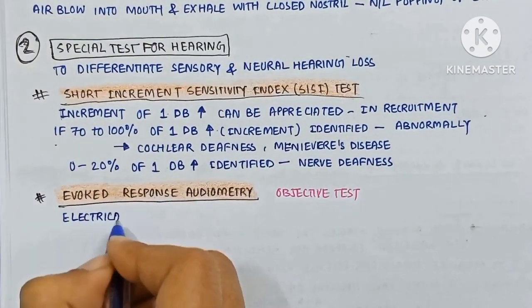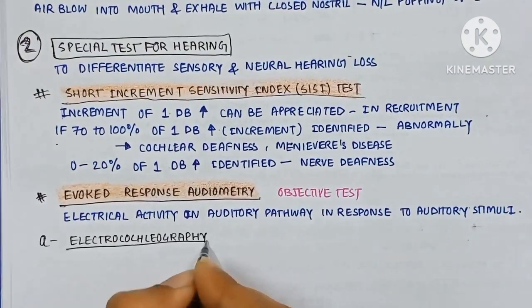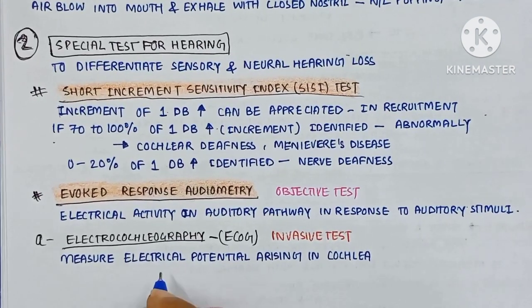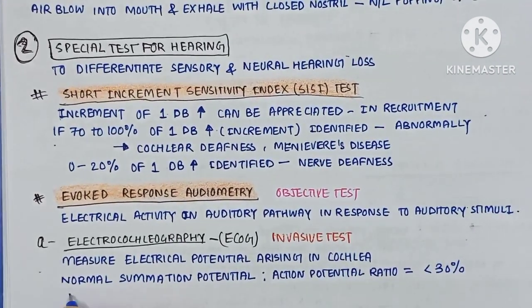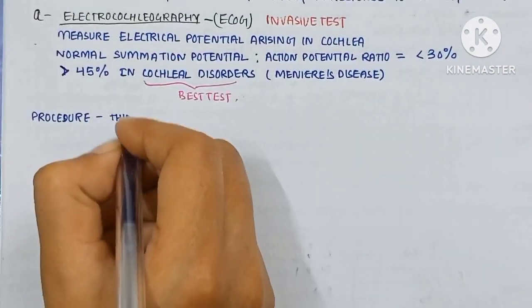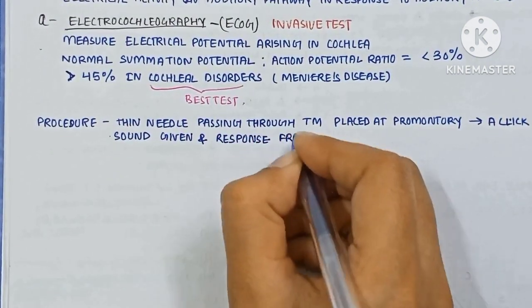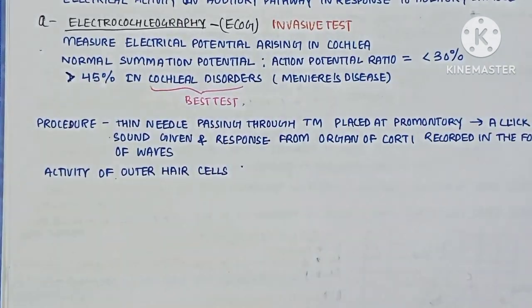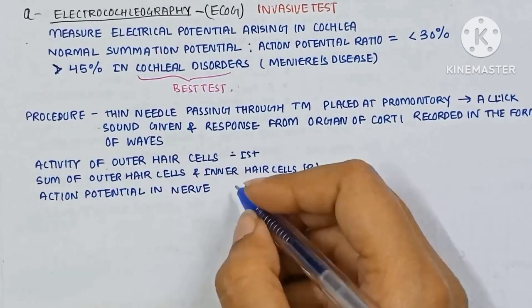Now the evoked response audiometry. It is objective testing in which the electrical activity in the auditory pathway in response to auditory stimuli is recorded. First is electrocochleography (ECoG), an invasive test measuring major electrical potentials arising in the cochlea. The normal summation potential to action potential ratio is less than 30 percent; if more than 45 percent, it indicates cochlear disorders such as Meniere's disease. The procedure: a thin needle is passed through the tympanic membrane and placed at the promontory, a click sound is given, and the response from the organ of Corti is recorded — first the outer hair cell activity, then the inner hair cell potential.